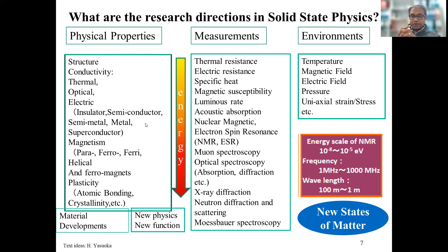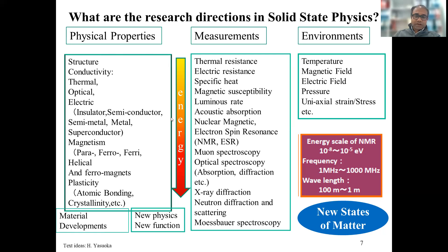These measurements give you the microscopic properties of the system. Moreover, you can do optical spectroscopy, absorption and diffraction, X-ray diffraction, neutron diffraction, scattering, and Mössbauer spectroscopy. Different measurements are done at different energy scales, and this arrow indicates which energy levels or energy scales each type of measurement can access.